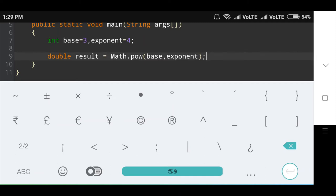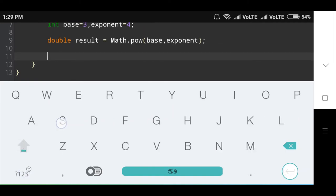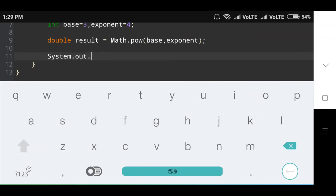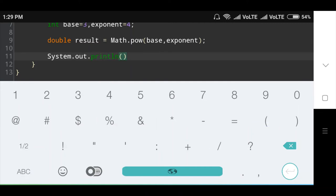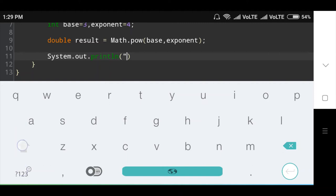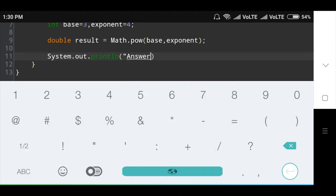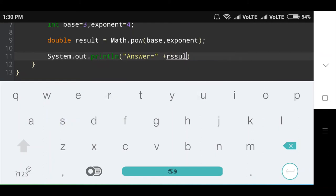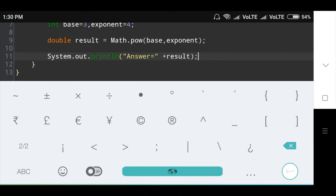Then I am printing the message. System.out.println, in bracket, "Answer is equals to" plus result. Here I will use plus to concatenate the string.